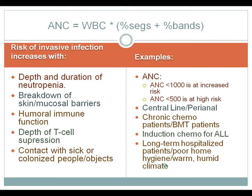Cells younger than bands really don't have any phagocytic potential and so are not counted. The risk of invasive infection increases with both the depth and duration of neutropenia, defined as less than 1,000 where increased risk begins, even though 1,500 is the low end of normal. And 500 is where the high-risk period begins. As you get closer to zero, the risk increases geometrically.